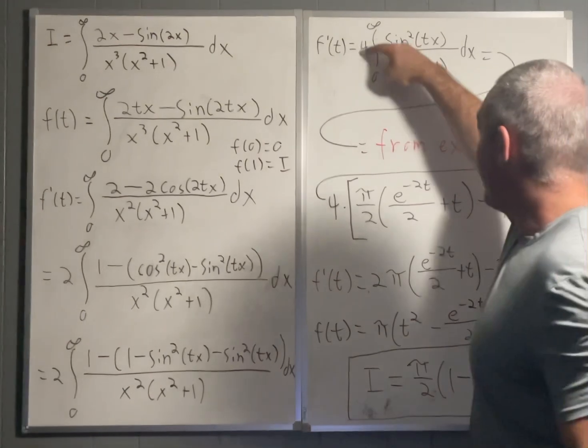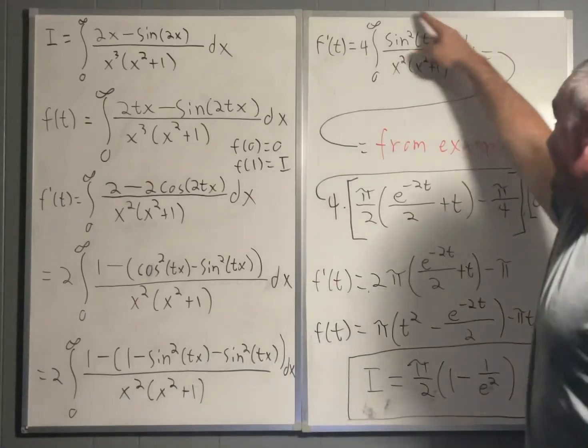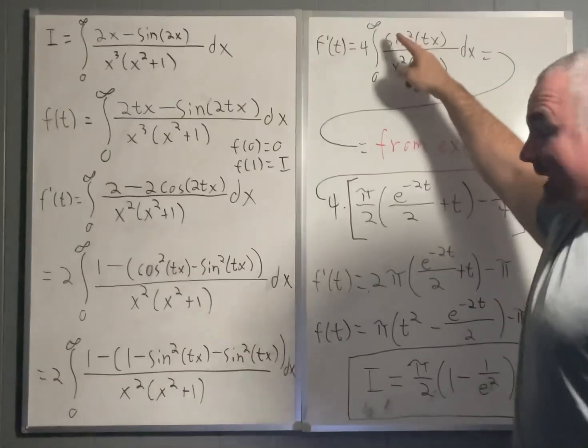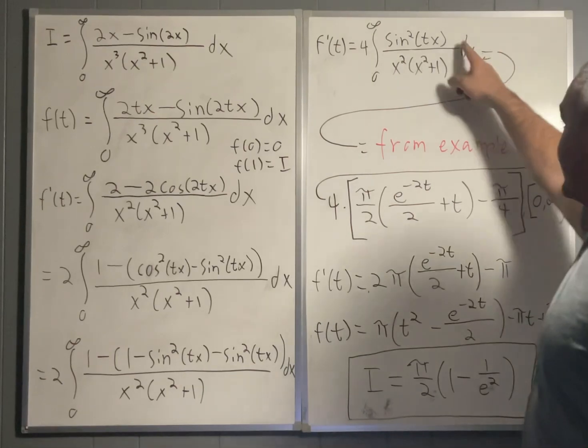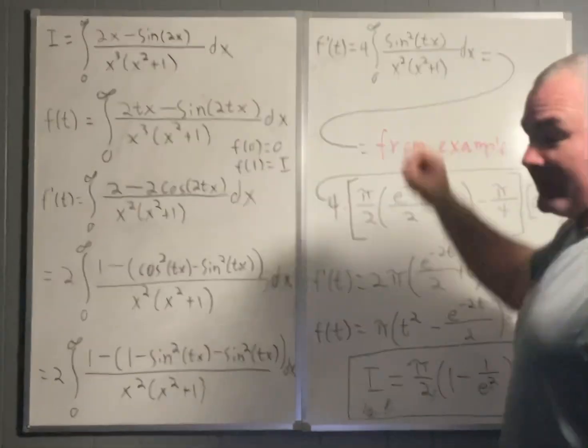Well, I should say we know what this part is without the 4. From example 19, we know that, you can go back and watch it if you want. It's called Feynman Integration Example 19 on my channel. We already know. And by the way, we know what we know from that video because of previous videos.